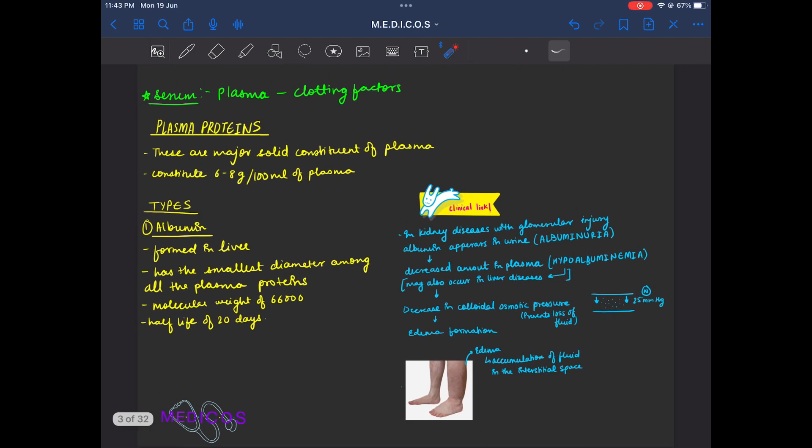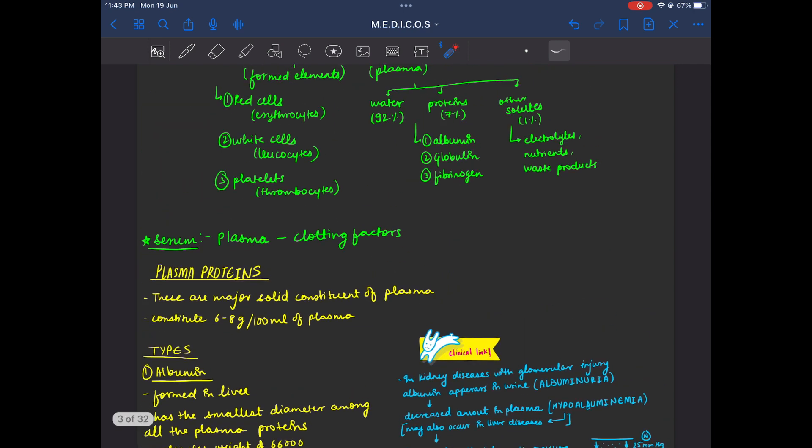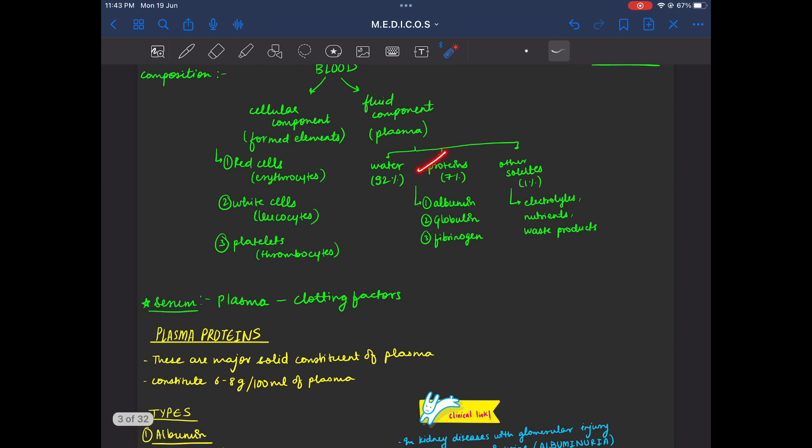Next important topic is plasma proteins. What are plasma proteins? These are major solid constituents of plasma. There are two types of solid constituents: Plasma proteins and other solutes.